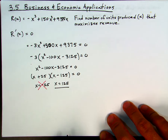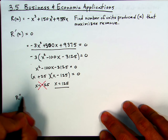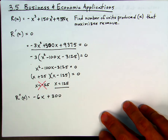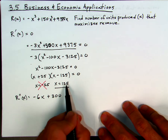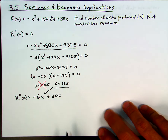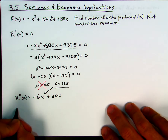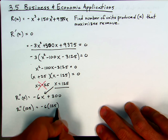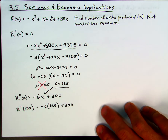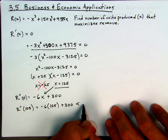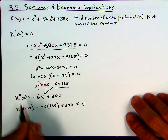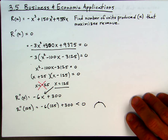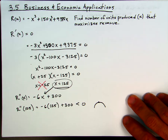One easy way to check is to use the second derivative test. The second derivative of our function is negative 6x plus 300. The way to use the second derivative test is we put in this value of x — if it's negative, the function is concave down; if it's positive, it's concave up. The second derivative evaluated at 125 is negative 6 times 125 plus 300, which I know is going to be negative. So my original function is concave down at this point, which means it has to be a maximum. The maximum will occur when I produce 125 units.